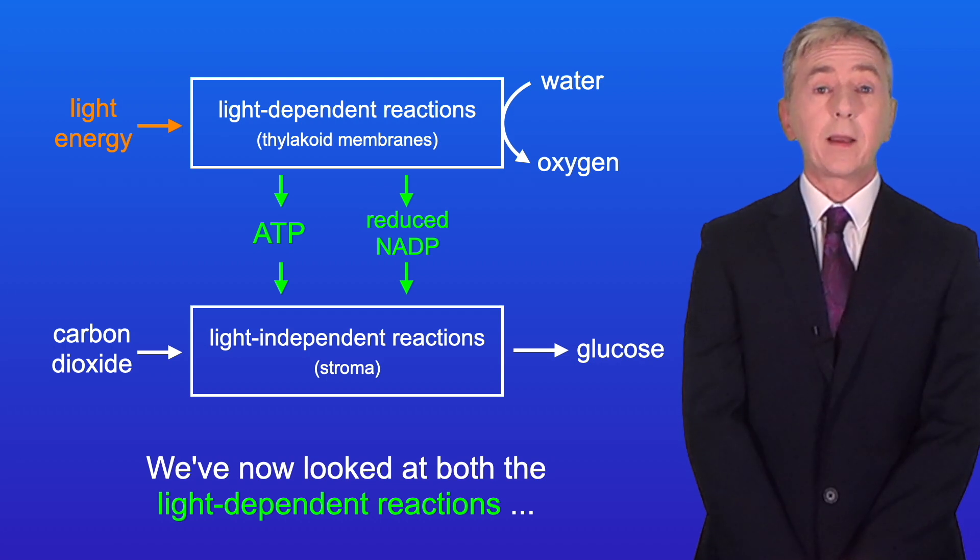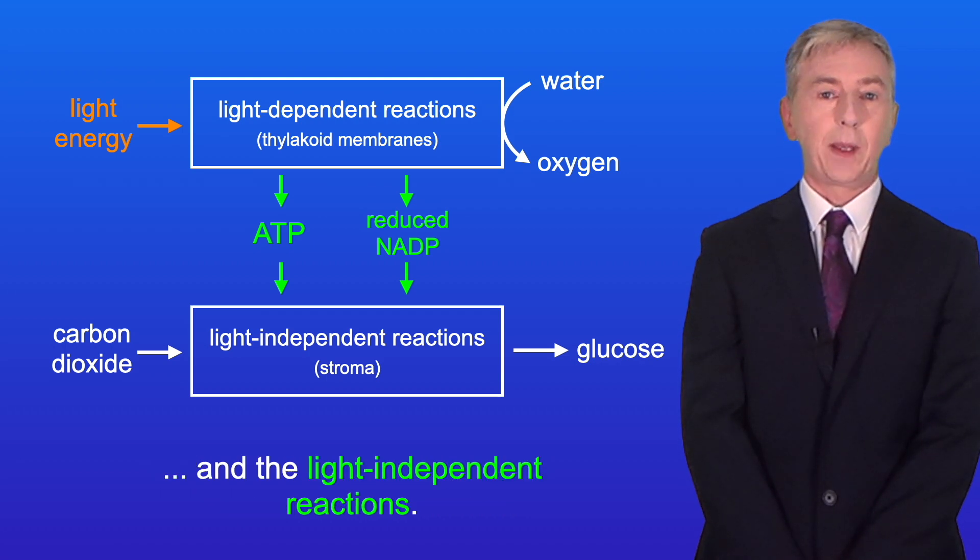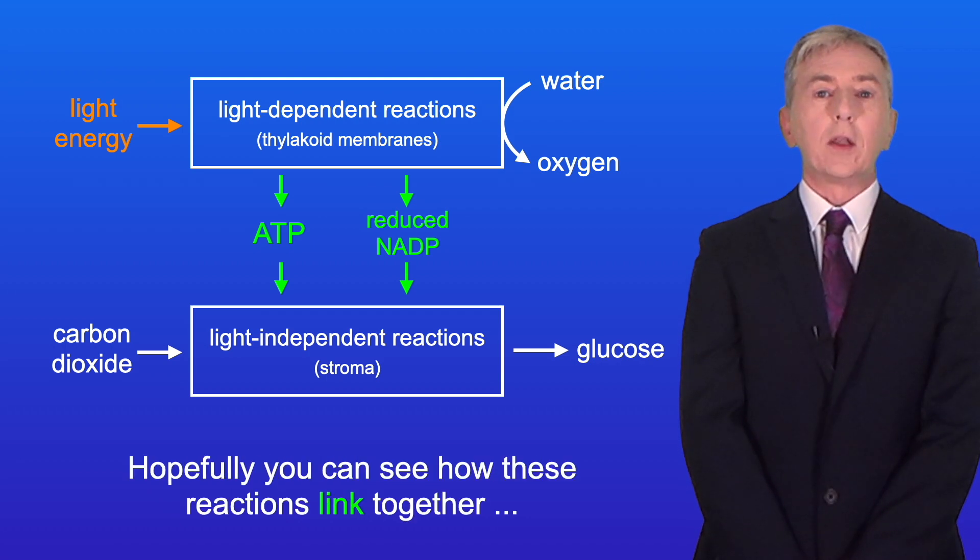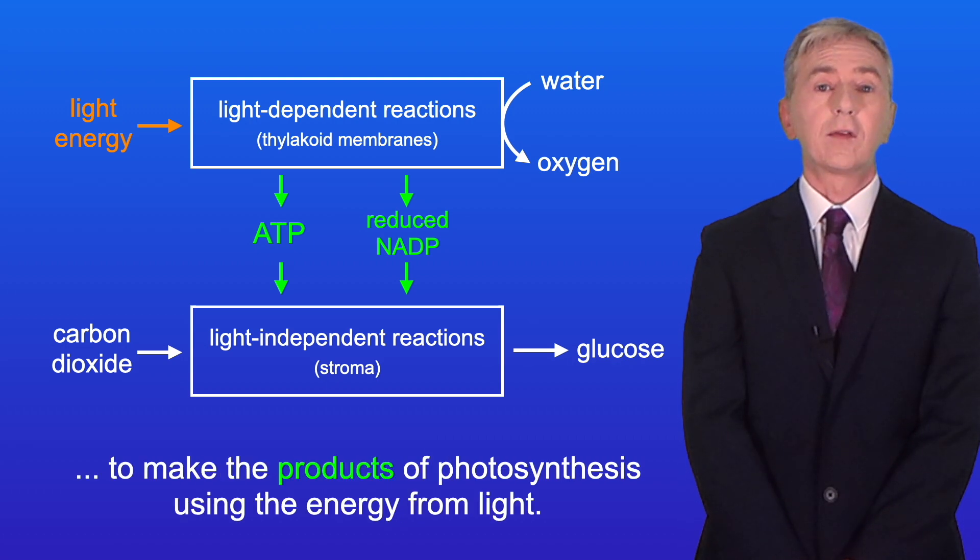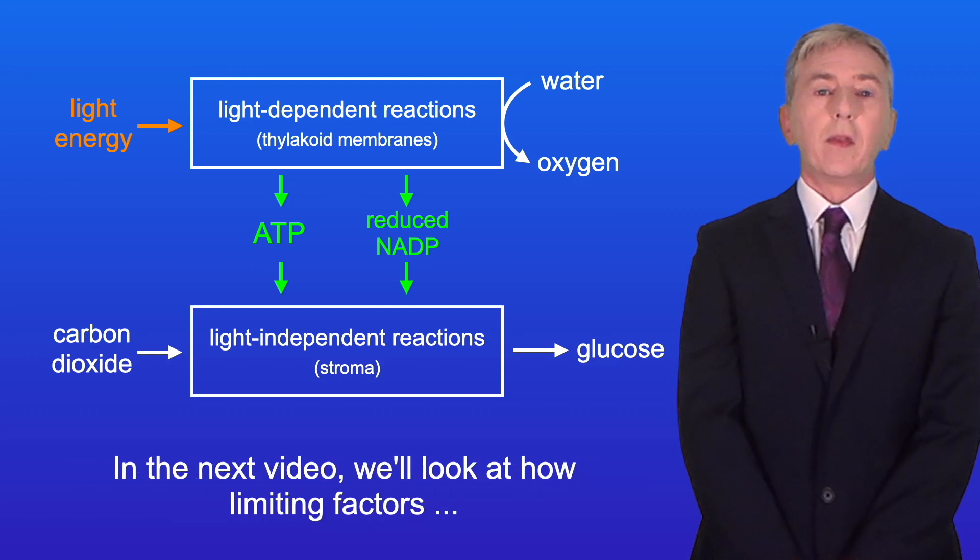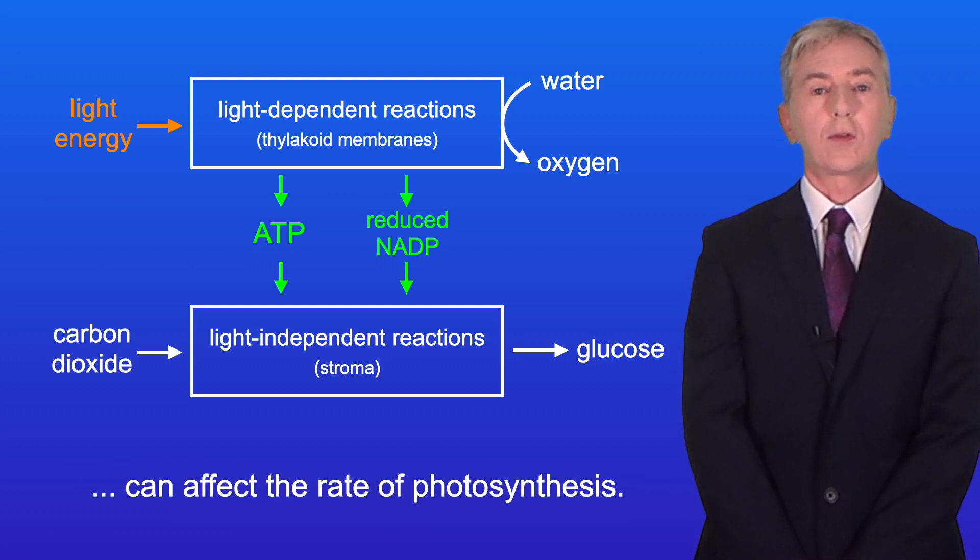So we've now looked at both the light-dependent reactions and the light-independent reactions. Hopefully, you can see how these reactions link together to make the products of photosynthesis using the energy from light. In the next video, we'll look at how limiting factors can affect the rate of photosynthesis.